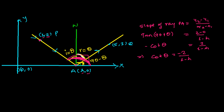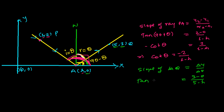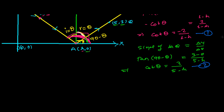Now let's focus on line AQ. The slope of AQ equals the difference of y-coordinates over difference of x-coordinates. The two points are (h, 0) and (5, 3). So slope of AQ equals (3 minus 0) over (5 minus h), giving 3 over (5 minus h). The angle made by AQ is 90 minus theta, so slope equals tan(90 minus theta), which equals cot(theta). Therefore, cot(theta) equals 3 over (5 minus h). We now have two relationships for cot(theta).